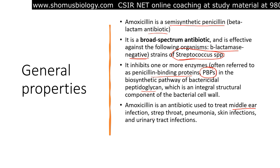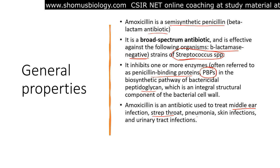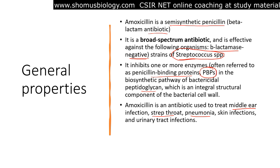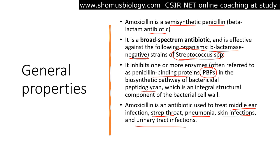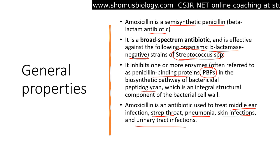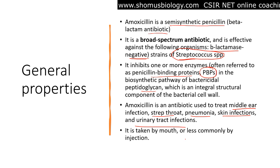Amoxicillin treats strep throat caused by Streptococcus, pneumonia — specifically it can prevent pneumonia caused by Streptococcus pneumoniae — as well as skin infections and urinary tract infections. These are the common infections against which amoxicillin is used. It is mostly taken by mouth and very rarely by injection.